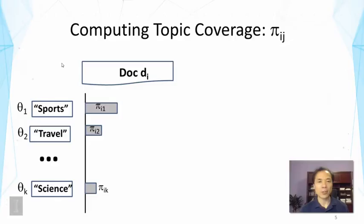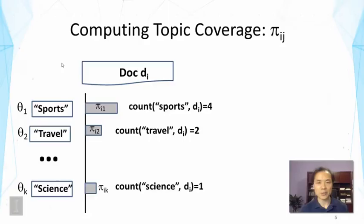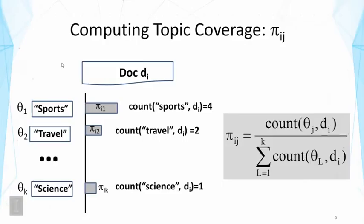Next, let's think about how we can compute the topic coverage pi sub ij. We have sports, travel, and science as topics, and suppose we are given a document — how should we figure out the coverage of each topic in the document? One approach is to simply count the occurrences of these terms. For example, sports might have occurred four times in the document and travel occurred twice, etc. Then we normalize these counts as our estimate of the coverage probability for each topic. The formula collects the counts of all the terms that represent the topics and normalizes them so that the coverage of each topic in the document adds up to one, forming a distribution over topics for the document.